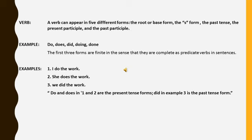Dear students, as you have studied about verbs in your previous classes, today we will discuss finite and non-finite verbs. Here you can see what is a verb. A verb can appear in five different forms: the root or base form, the S form, the past tense, the present participle, and the past participle. Here are some examples: do, does, did, doing, done.